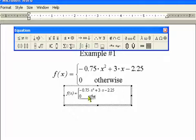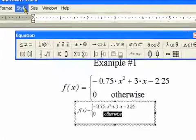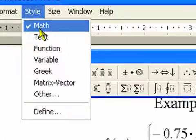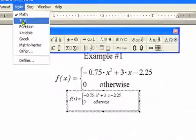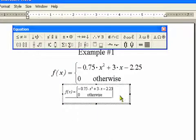Now when we type in 'otherwise,' notice that it is italicized. When we have italicized, it means that we're working with a function, and this is just an English word. So what we're going to do is highlight the word 'otherwise,' go up to style, and take it from math to text, and now it will look like regular text, and we're finished.